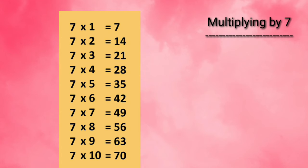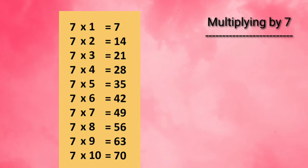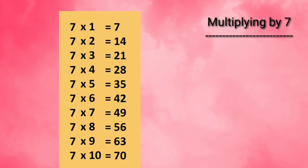7 times 3 is 21. 7 times 4 is 28. 7 times 5 is 35. 7 times 6 is 42.